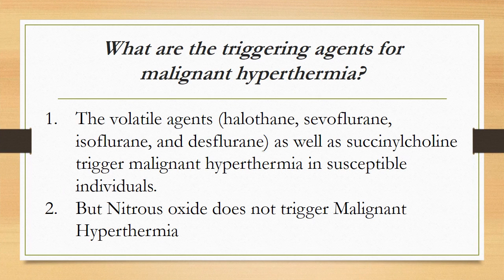What are the triggering agents for malignant hyperthermia? The volatile agents — halothane, sevoflurane, isoflurane, and desflurane — as well as succinylcholine trigger malignant hyperthermia in susceptible individuals. Nitrous oxide does not trigger malignant hyperthermia.